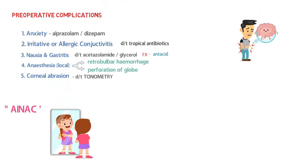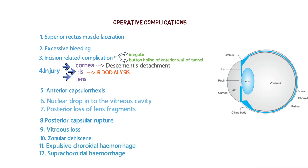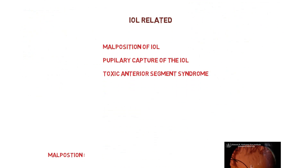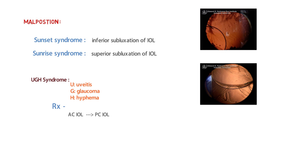To summarize, this lecture covered preoperative complications (mnemonic AYNAK), operative complications (12 points, step-by-step), early and late postoperative complications (mnemonics FETISH and ABCDEF, 7 points each), and IOL-related complications including malposition, pupillary capture, toxic anterior segment syndrome, sunset and sunrise syndromes, and UGH syndrome. Treatment for UGH syndrome is replacement of anterior chamber IOL by posterior chamber IOL.